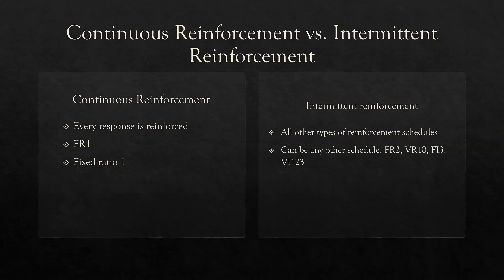Continuous reinforcement versus intermittent reinforcement. Continuous reinforcement means every response is reinforced. We typically use it when teaching a new behavior because we want constant reinforcement. Another way to look at continuous reinforcement is an FR1 — fixed ratio 1 — where you require one response for reinforcement and that never changes. Everything else is considered intermittent reinforcement. The only continuous reinforcement schedule is an FR1, because every other schedule changes in some way — even an FR2 requires more than one response. All other types — FR2s, VR10s, FI3s, VIs — are intermittent.